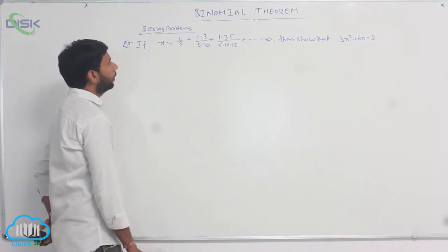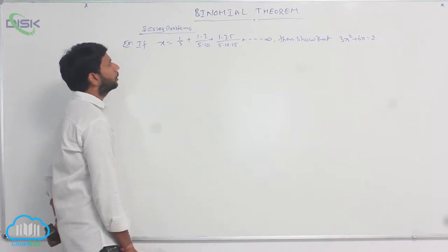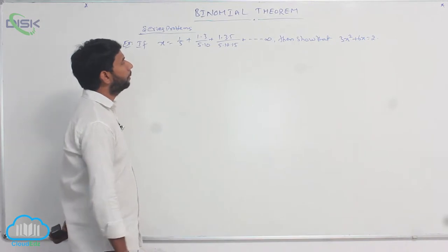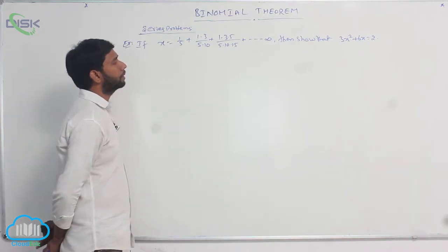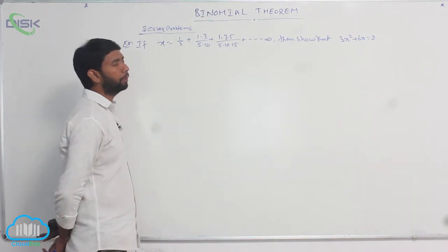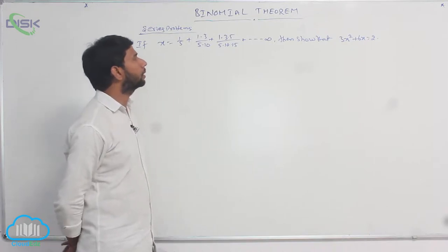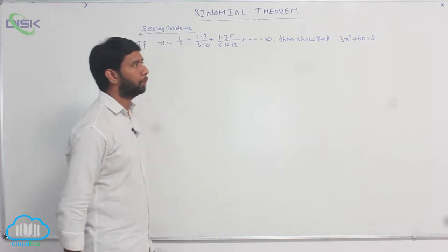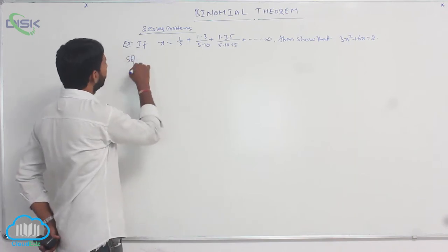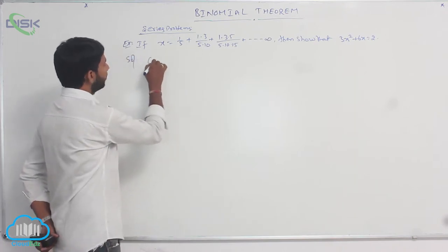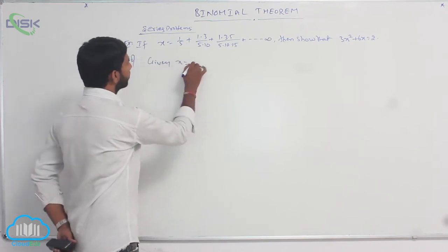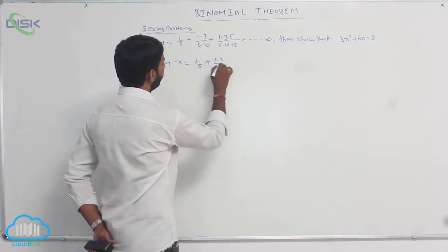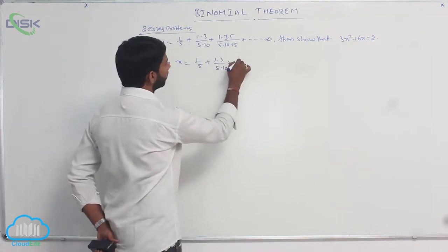If x is equal to 1/5 plus 1·3/(5·10) plus 1·3·5/(5·10·15) plus and so on up to infinity, then show that 3x² + 6x = 2. The given series is x = 1/5 + 1·3/(5·10) + 1·3·5/(5·10·15) + and so on.